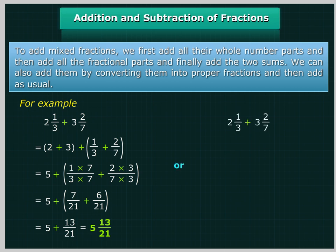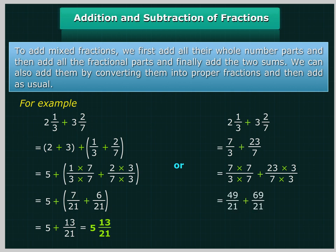Alternatively, 2 and 1 upon 3 plus 3 and 2 upon 7 is equal to 7 upon 3 plus 23 upon 7, which is equal to (7×7)/(3×7) plus (23×3)/(7×3), equal to 49 upon 21 plus 69 upon 21, equal to 118 upon 21, which is equal to 5 and 13 upon 21.